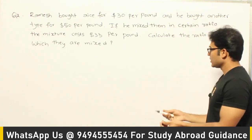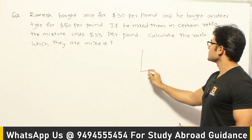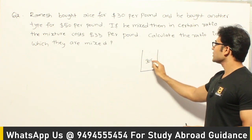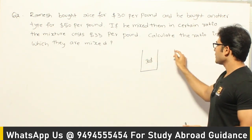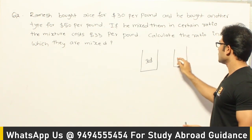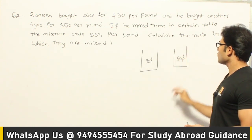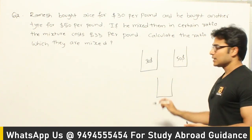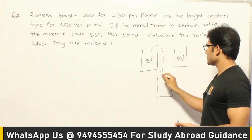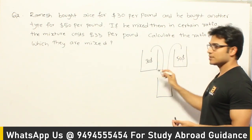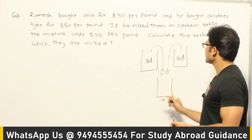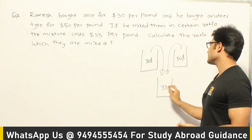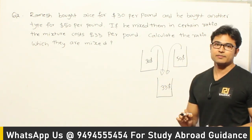In this question, they are saying that Ramesh bought two types of rice. One rice has a cost of $30 per pound and the other one has a cost of $50 per pound. We need to take some rice from each and mix them in such a way that the final mixture costs $33.